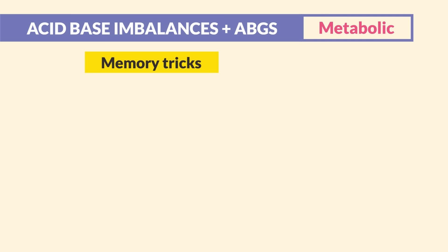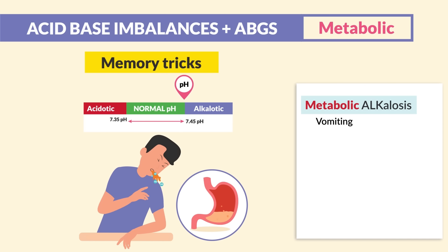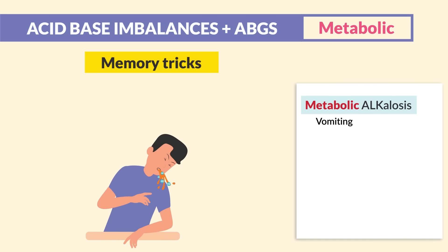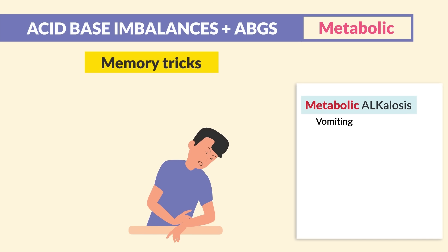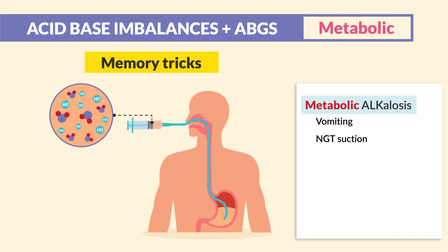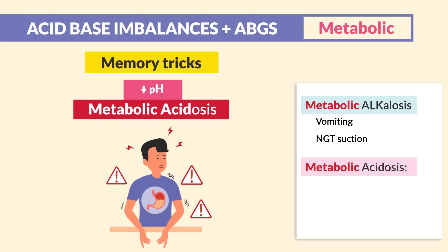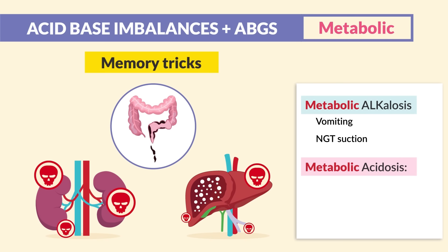Now our memory tricks are really fun here. With metabolic alkalosis, we vomit out all that acid, leaving us in a base or alkalotic state. Just think alkalosis — it sounds like you're throwing up — and you hold your stomach region indicating that metabolic area. This is also true with NG tube suctioning — too much acid loss leaves us in a base or alkalotic state. Key points: vomiting and too much NG tube suctioning cause metabolic alkalosis.